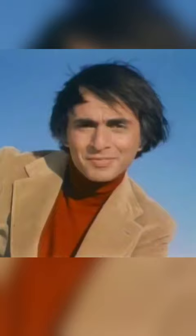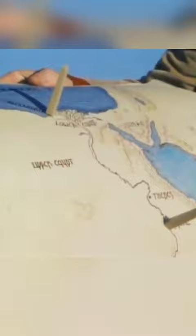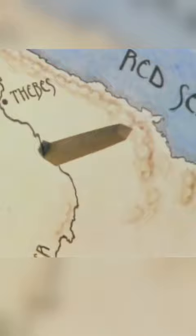But how could it be, Eratosthenes asked, that at the same instant there was no shadow at Syene and a very substantial shadow at Alexandria? The only answer was that the surface of the Earth is curved.